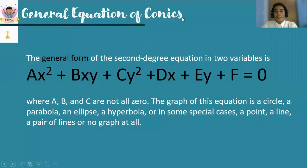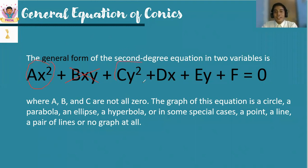Recall the general form of second-degree equations. All second-degree equations have this form, but for conic sections, we omit bxy as part of the general form. So we only consider the x squared and the y squared that appear in the formulas.